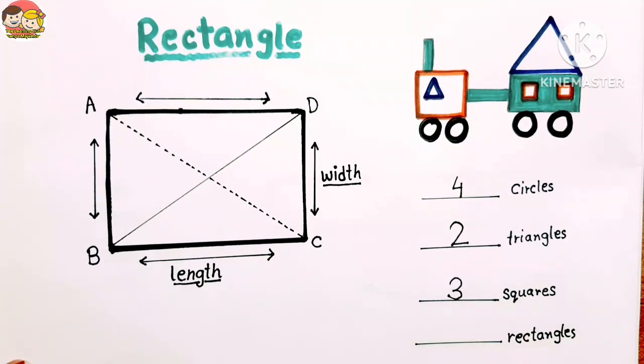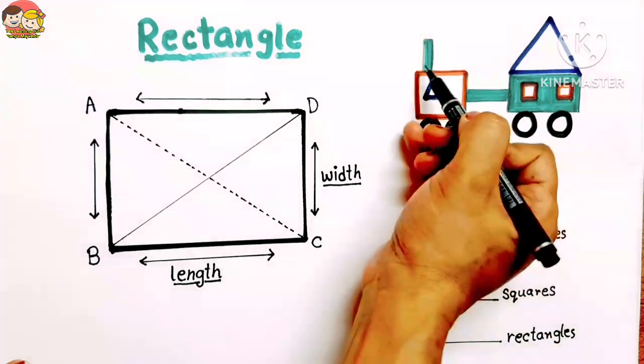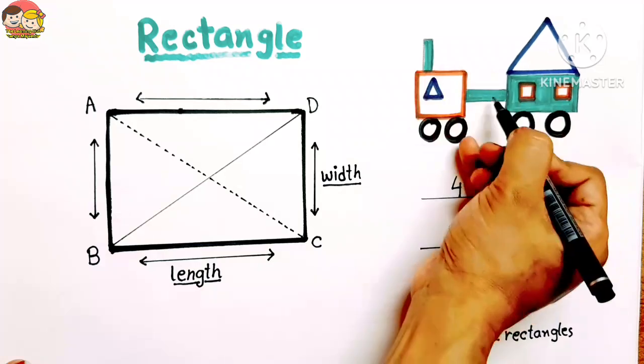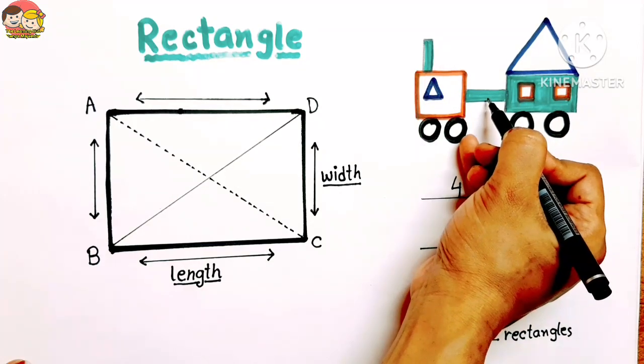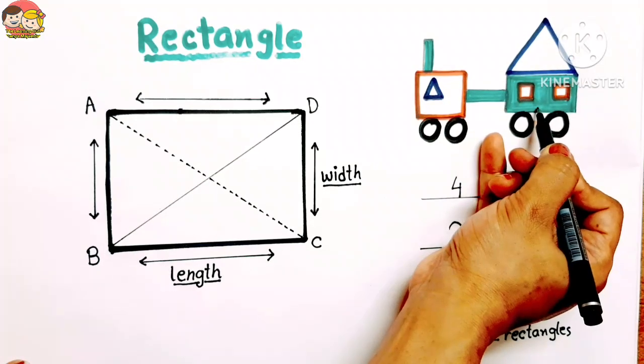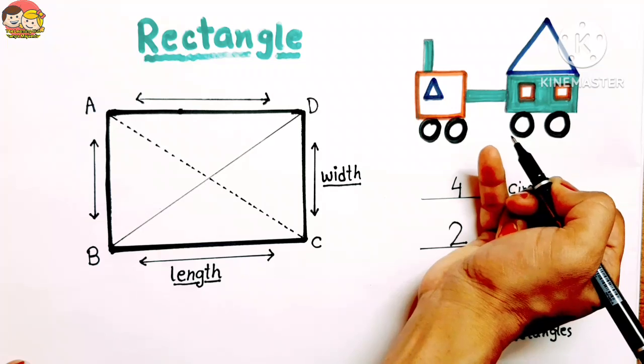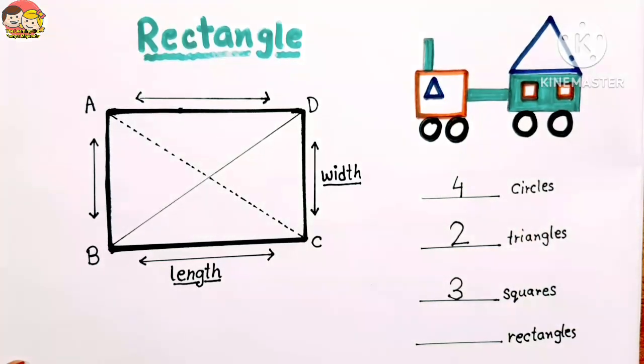Next, rectangles. Find out how many rectangles are there? 1, 2, then 3. So there are 3 rectangles. So let's write.